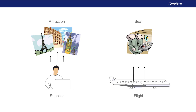The other difference is that when we're entering the details of a flight, we're also entering the details of its seats — just like when we enter an invoice with lines, all the information is entered at once. On the other hand, the supplier's and attraction's details do not have to be entered all at the same time. An entity such as seats, which only makes sense if it's represented in relation to another entity — in this case, flights — is called a weak entity.